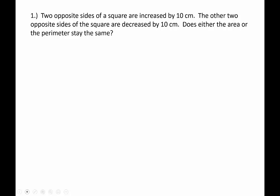Okay, so step one — we need to make sure we understand the problem. What are we looking for? We're looking to see what happens to the area and the perimeter. Initially we're talking about a square, but if we take a square and change the dimensions — increase one side by 10 and decrease the other side by 10 — then it's going to turn into a rectangle.